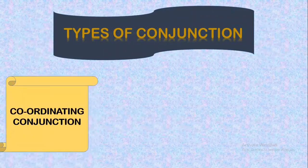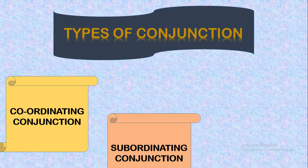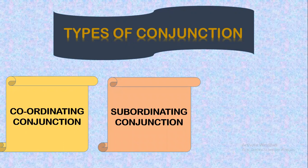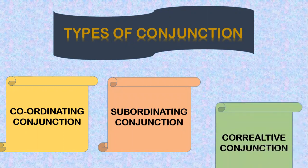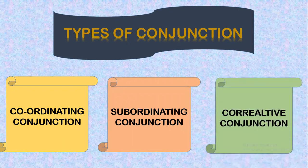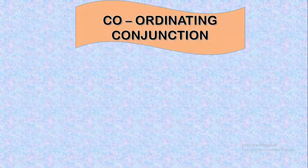We have coordinating conjunction, subordinating conjunction, and correlative conjunction. Let us see each one of them with its definition and examples. The first one: coordinating conjunction.